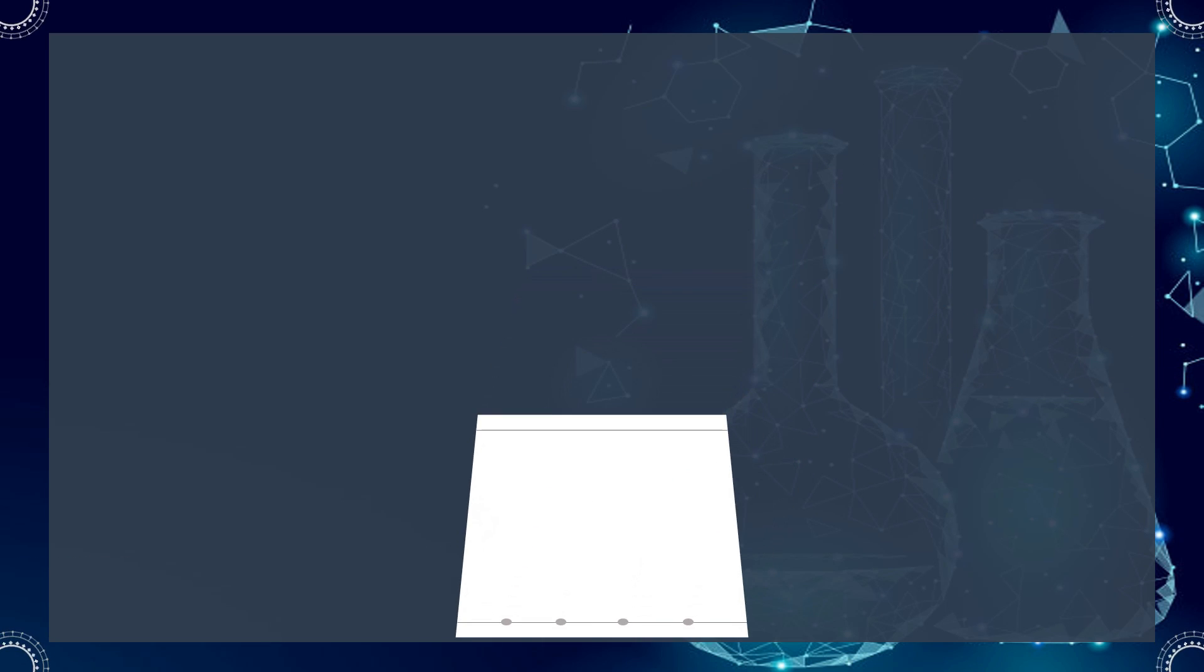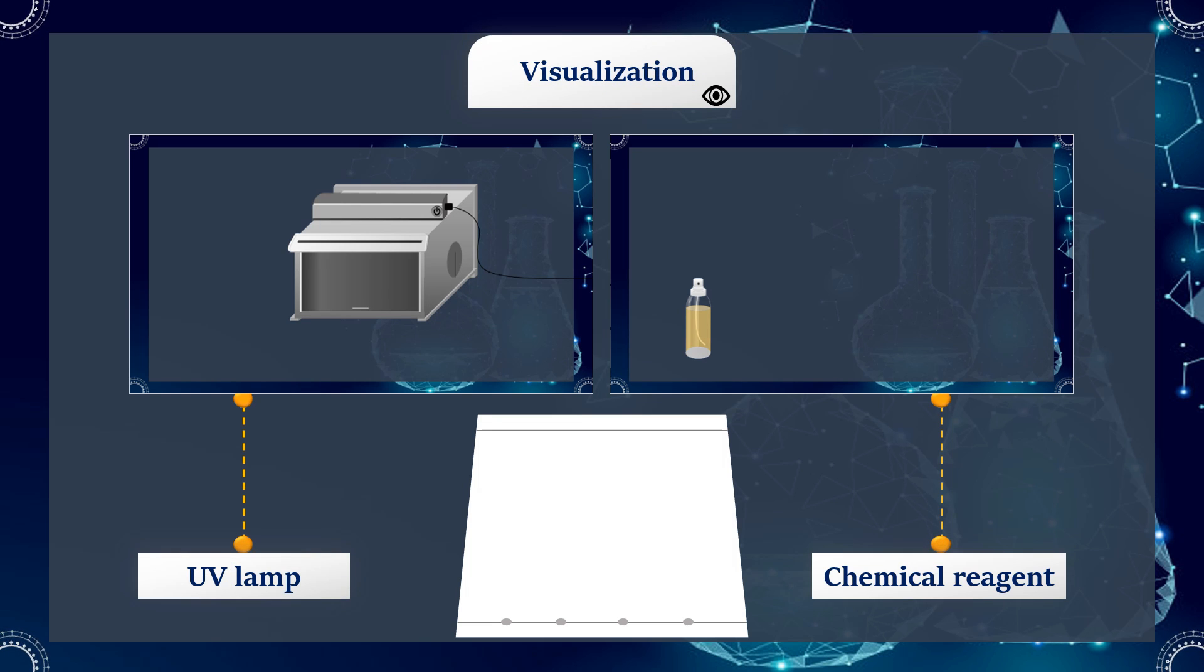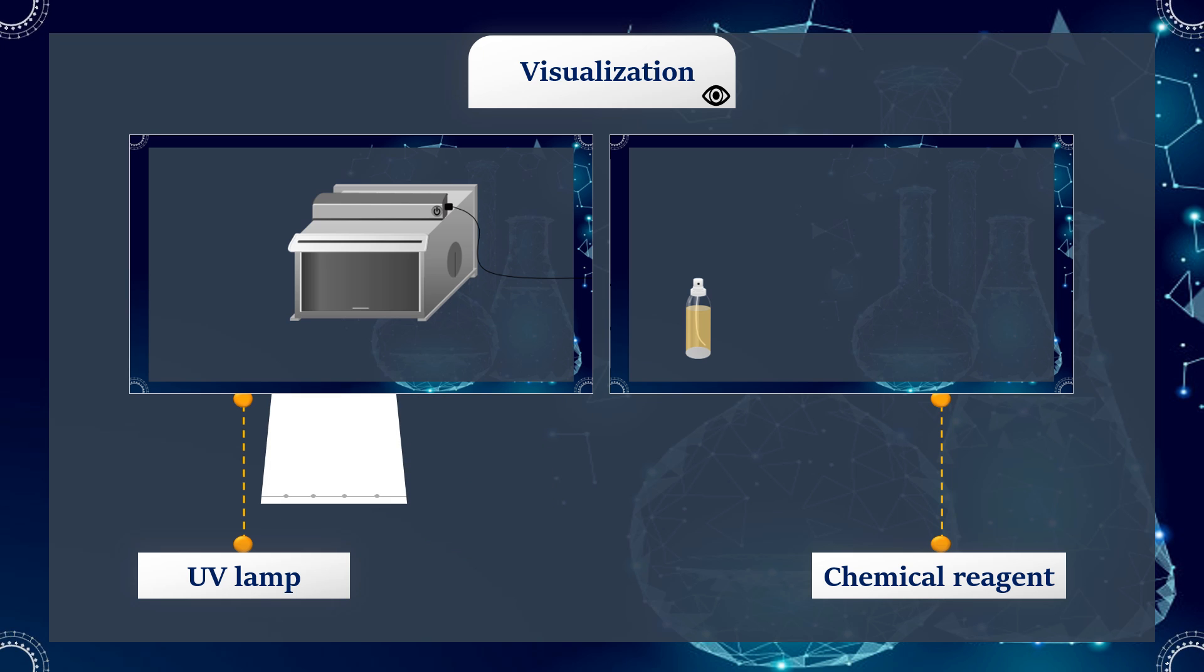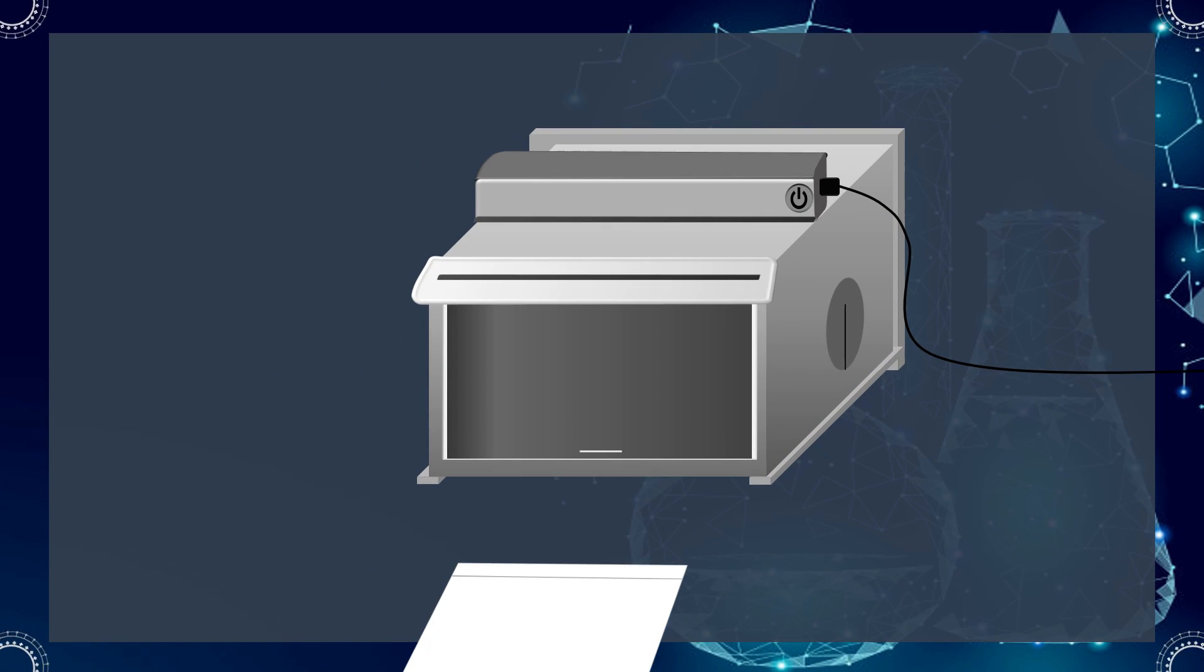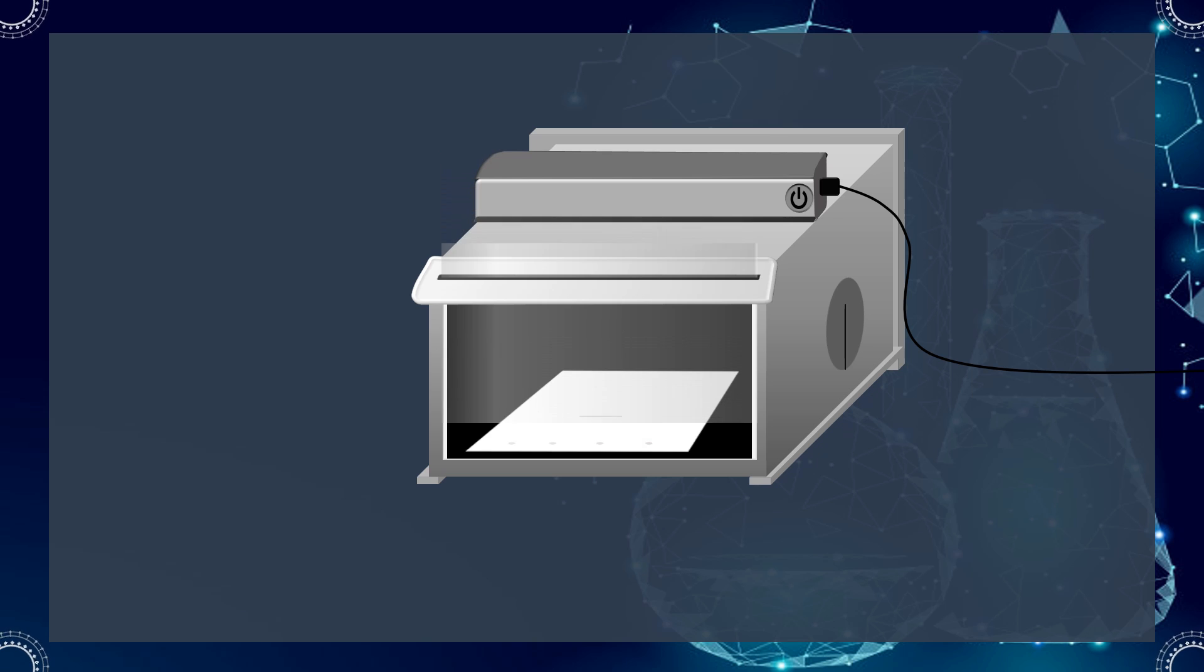The plate is visualized under the UV lamp, or by using certain chemical reagents, if the substances of interest are colorless. Some plates are pre-coated with a phosphor, allowing many compounds to be visualized by using ultraviolet light. Or a derivatization of the sample with fluorescent reagent can be carried out before running the TLC plate.